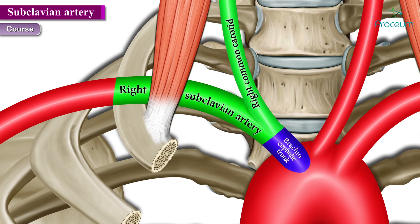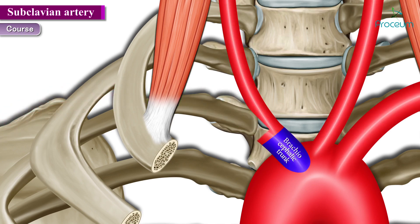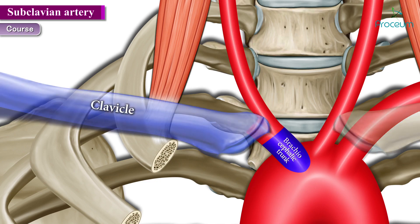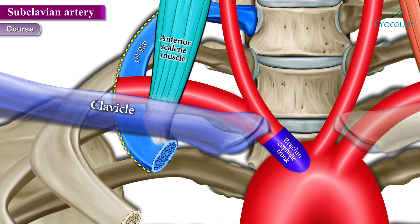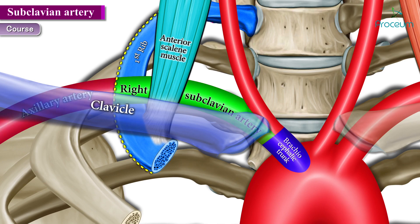After formation from the brachiocephalic trunk, the right subclavian artery courses upwards above the clavicle, then runs posterior to the scalenus anterior muscle — also called the anterior scalene muscle — to reach the lateral border of the first rib, where it officially becomes the axillary artery.